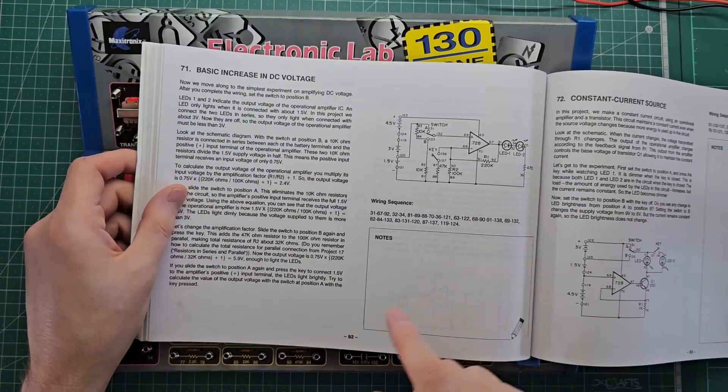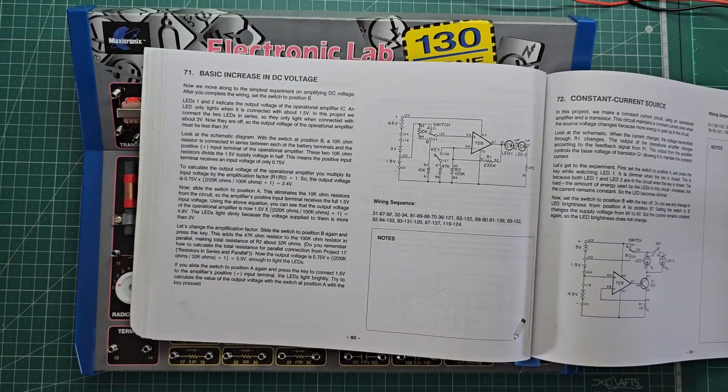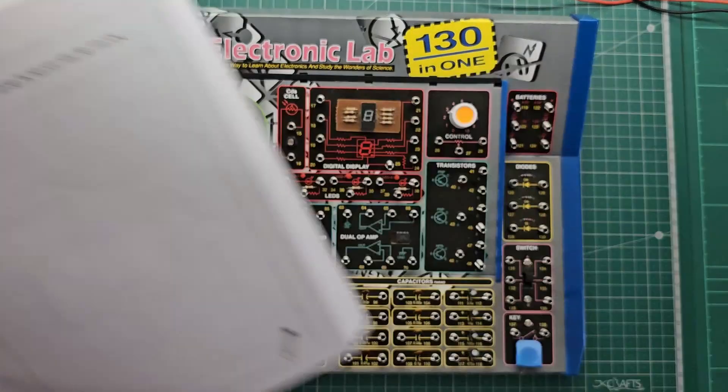I'm going to turn to circuit number 71, which is a basic voltage amplifier. Let's put this together and see what happens.